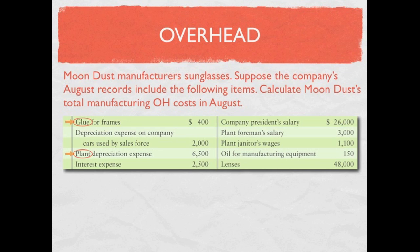The company president's salary: the president works in the administrative building, not the plant, so that is an administrative expense — an operating expense. The plant foreman's salary: again, the key word 'plant' tells us this is overhead. The plant janitor's wages: same key word 'plant' — this is overhead, specifically indirect labor. Oil for the manufacturing equipment: 'manufacturing' is the key word — this is other overhead. Lenses are a direct material, not part of overhead. Adding up all the overhead items gives a total manufacturing overhead cost of $11,150.